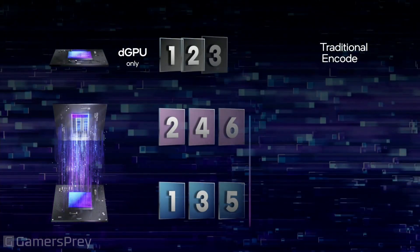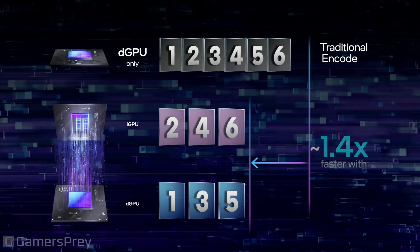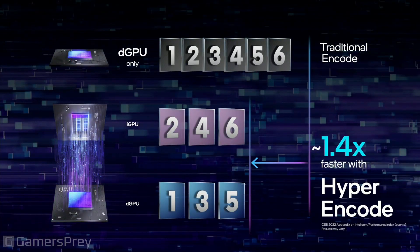Now, with HyperEncode, we leverage all the technology in the platform and automatically divide the encoding work between the CPU's integrated graphics and the discrete Intel GPU. This speeds up the encoding by 1.4x. Now, let's take a look at a demo.